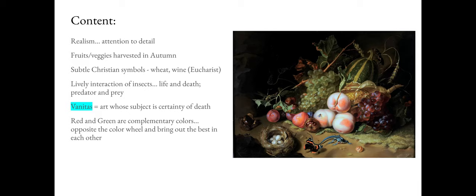One is the vocabulary term vanitas — art whose subject is about the certainty of death. It's a cheery subject! But think about it: fruit left out will rot over time. The animals — especially the butterfly and lizard prominent in the lower central area, one as predator and one as prey — and flies, which tend to be seen on things that are decaying, give a subtle reminder of things decaying over time, like people. That is the message in a vanitas art piece: you can't outrun death. There is a certainty to it, so focus your attention on what is truly important.